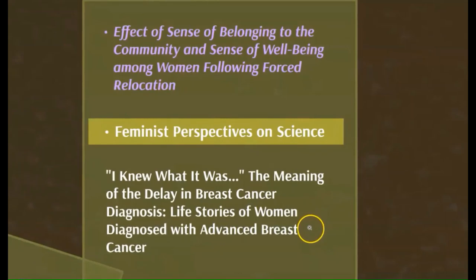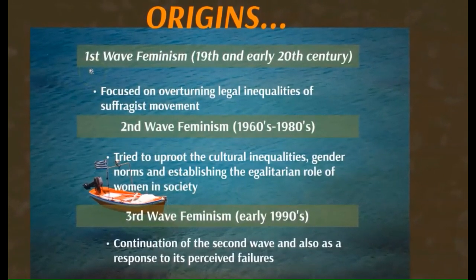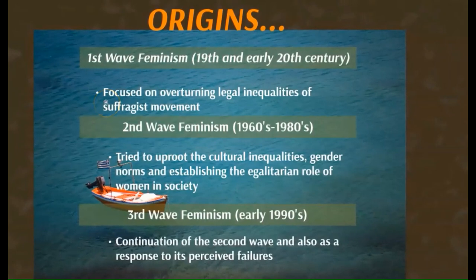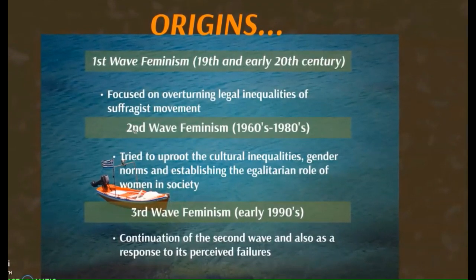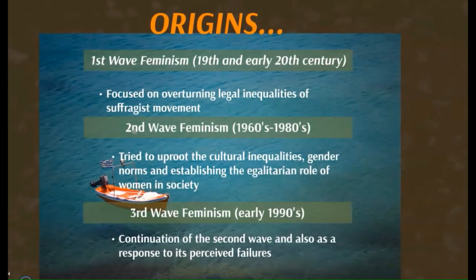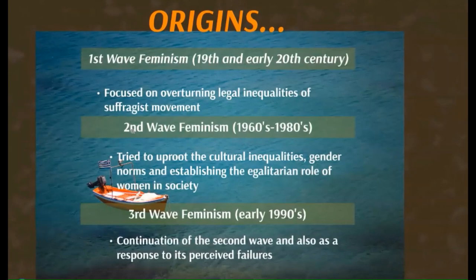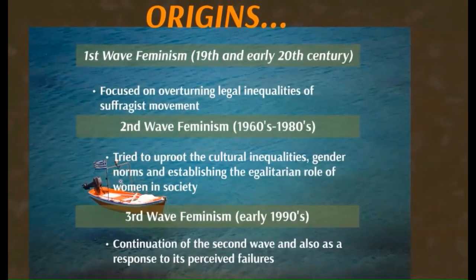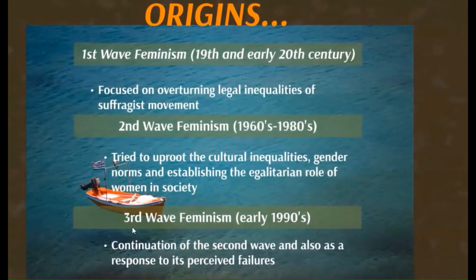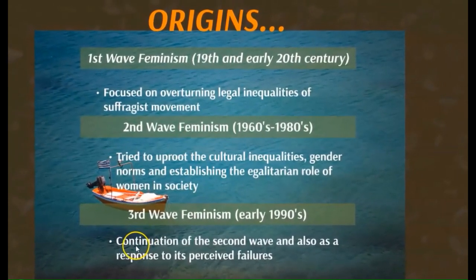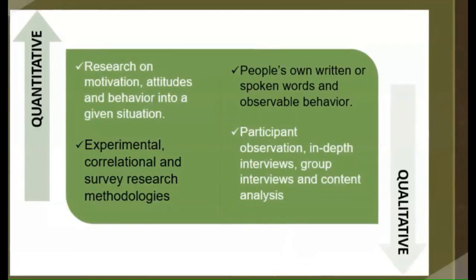Life stories of women diagnosed with advanced breast cancer. The first wave feminism happened during the 19th and early 20th century, focusing on overturning legal inequalities of the suffragist movement, which is about giving women the right to vote. Second wave feminism happened between the 1960s to 1980s, which tried to uproot cultural inequalities, gender norms, and establishing the egalitarian or equal role of women in society. The third wave feminism happened in the early 1990s, as a continuation of the second wave and also as a response to its perceived failures.